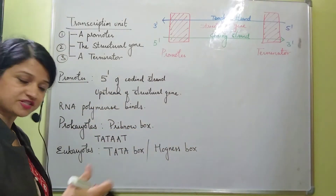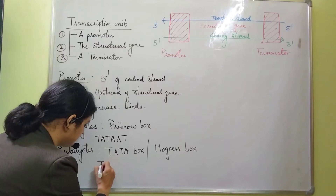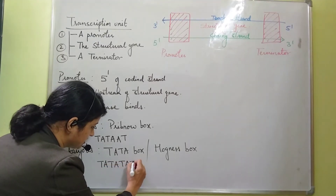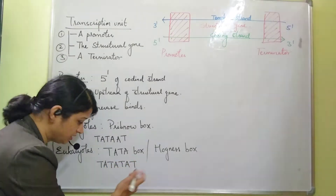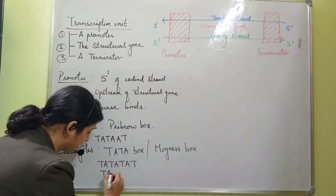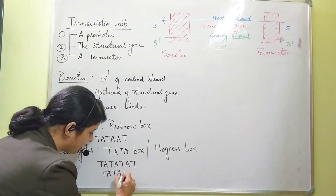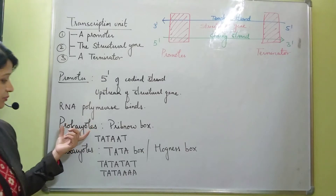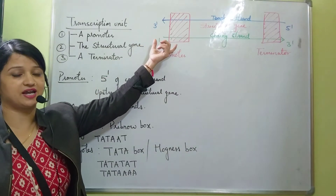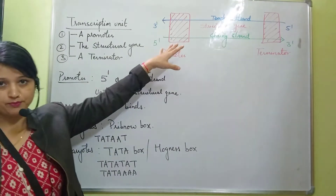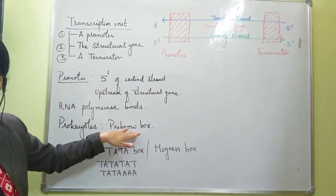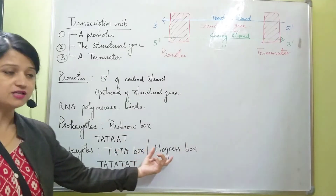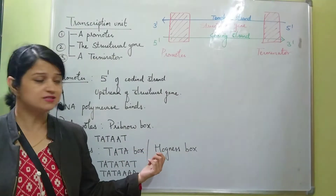The TATA box has a sequence of seven base pairs — TATATAA. So in prokaryotes there is a specific AT-rich region in the promoter known as the Pribnow box having six base pairs, and in eukaryotes it is known as the TATA box or Hognes box.